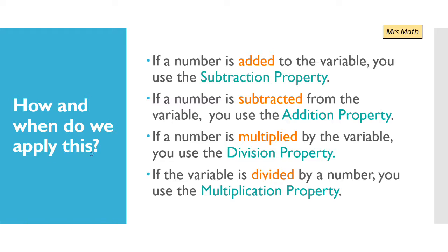But how and when do we apply this? We apply this as follows. If a number is added to the variable, you use the subtraction property — the inverse operation of addition is subtraction. If a number is subtracted from the variable, you use the addition property — addition is the inverse operation of subtraction. If a number is multiplied by the variable, you use the division property — the inverse operation of multiplication is division. And if the variable is divided by a number, you use the multiplication property — multiplication is the inverse operation of division.